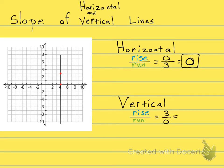And what happens if we have a zero in the denominator? It's undefined. So the slope of a vertical line is undefined.